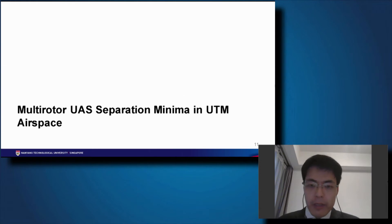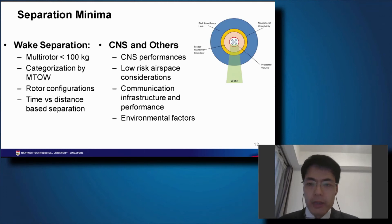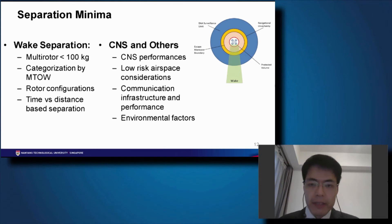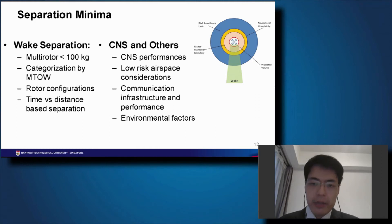We have also done work on separation minimum requirements for multi-rotor UAS. For separation minimums, we look at wake separation and CNS and other factors. Currently we are only considering multi-rotor UAS under 100 kg and wish to categorize them by maximum takeoff weight, as is done in civil aviation. For CNS and other factors, the approach will be similar to radar separation in civil aviation, looking at communication, navigation, and surveillance performance for lower-risk airspace.